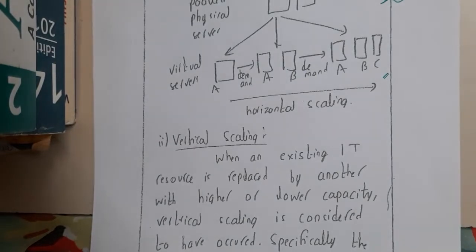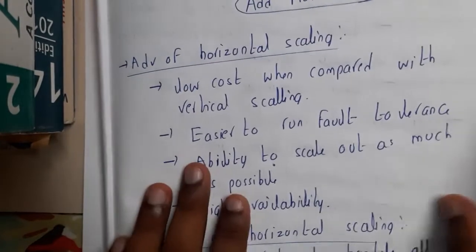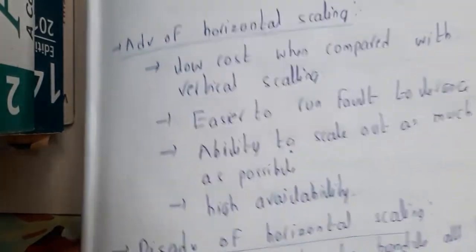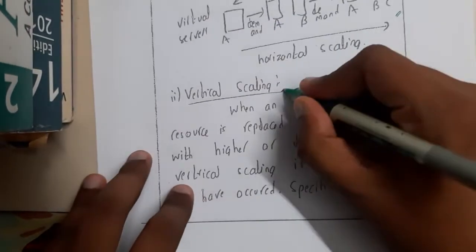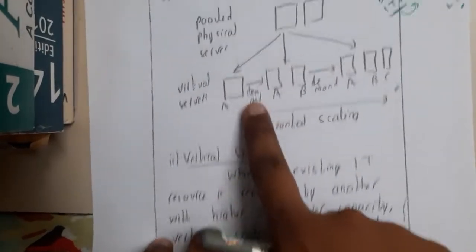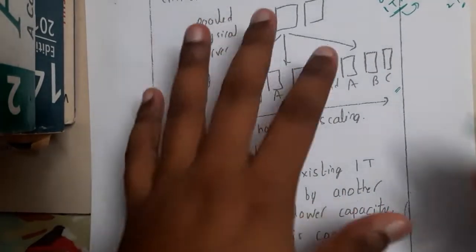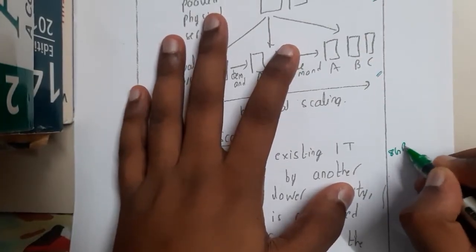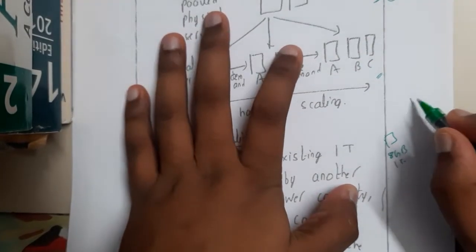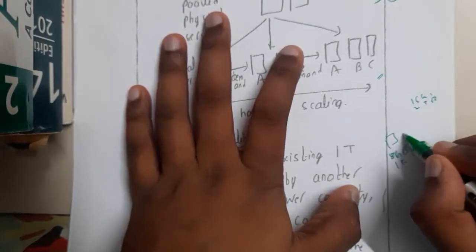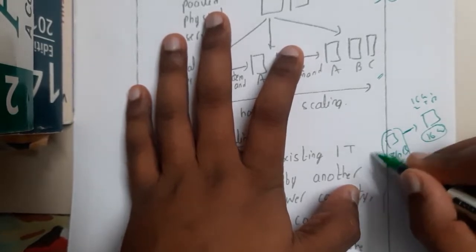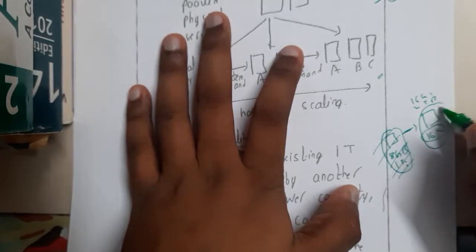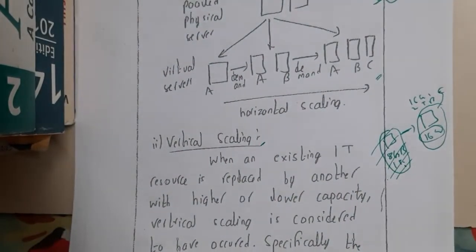Now let us continue with vertical scaling. Instead of adding a new system to your existing one, assume your current system is A with 8 GB RAM and 1 TB storage. Your goal is to reach 16 GB and 2 TB. Instead of keeping system A, you abandon the old system and buy a brand new system with the required configuration. This concept is called vertical scaling.